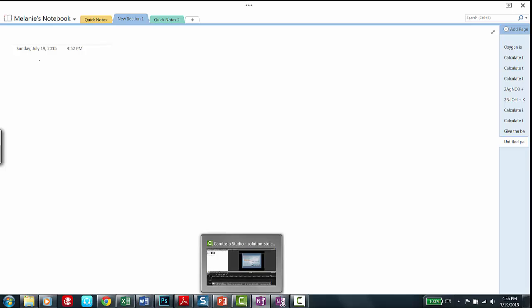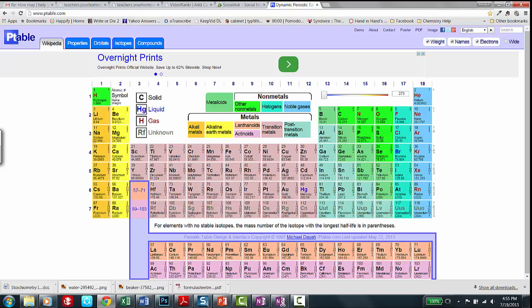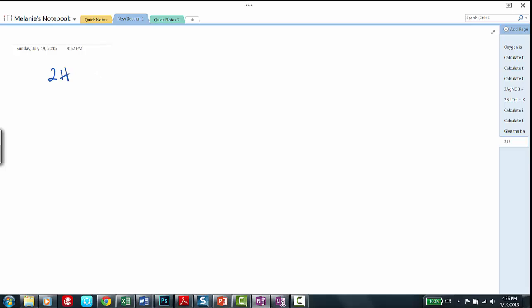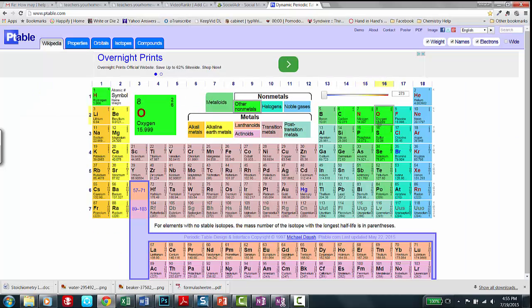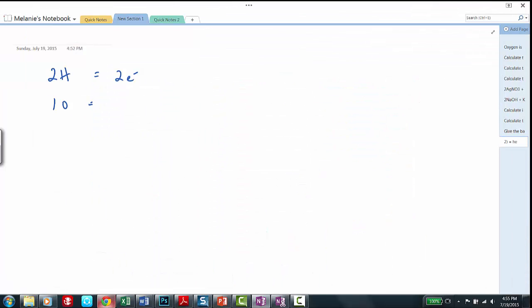When I do Lewis dot structures of covalent compounds, I first take an electron inventory. So I have two hydrogens, and each hydrogen, being in the first column, has one valence electron. So that's a total of two electrons, one for each hydrogen. And I have one oxygen. And oxygen has one, two, three, four, five, six valence electrons. So altogether I have eight valence electrons.